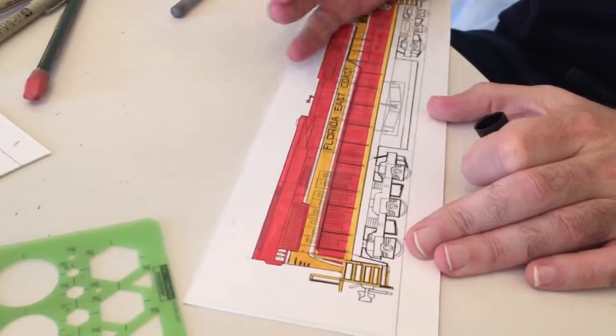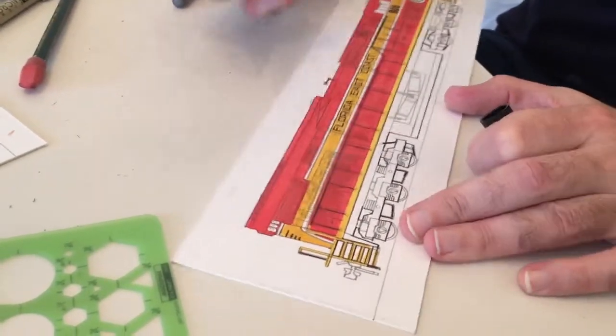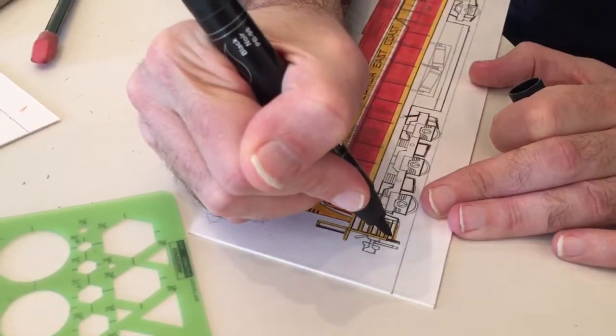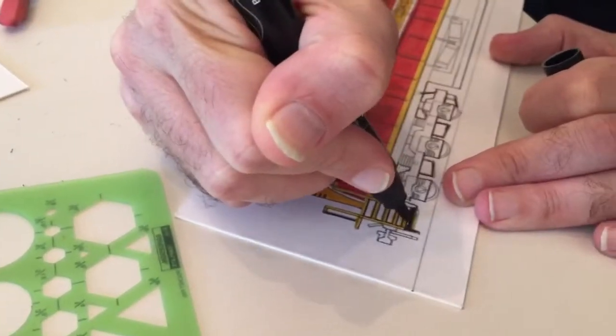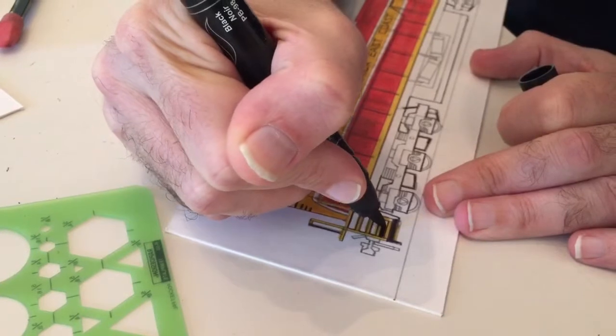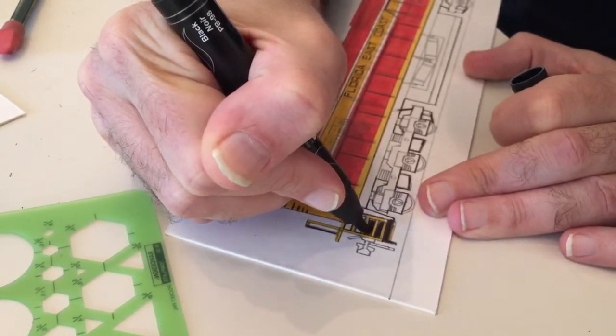Now, just like we painted the orange and the red, now we'll be painting the black for the underframe. And as I paint the steps, the steps are a very delicate area.